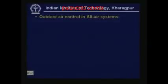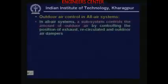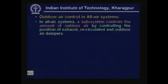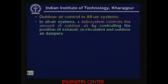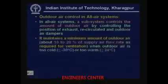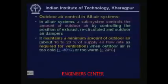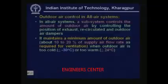Now let us look at outdoor air control in all air systems, which refers to both single duct as well as dual duct systems. In all air systems, a subsystem controls the amount of outdoor air by controlling the position of exhaust, recirculated, and outdoor air dampers. This system maintains a minimum amount of outdoor air — about 10 to 20 percent of supply air flow rate — as required for ventilation when the outdoor air is too cold or too warm.